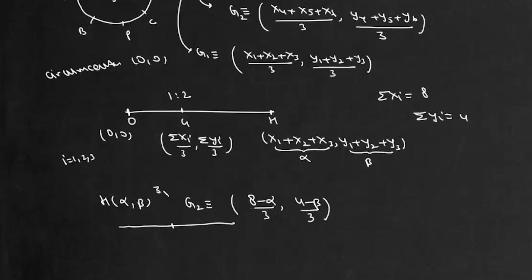So we will look for a point which will divide it in the ratio 3 is to 1. Now coordinate of that point will be 8 minus alpha plus alpha upon 4 and here will be 4 minus beta plus beta upon 4. So this point will be 2 comma 1.